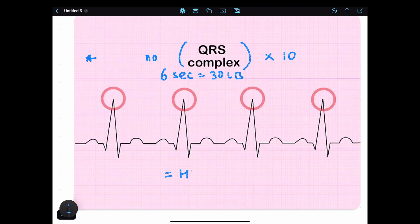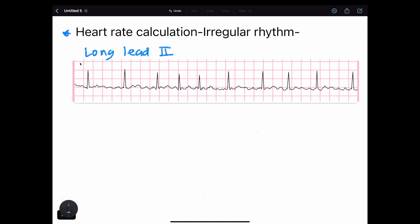You will simply get the heart rate for irregular heart rhythm. Now come to our original example. Let's calculate the heart rate for this irregular rhythm based on what we learned.